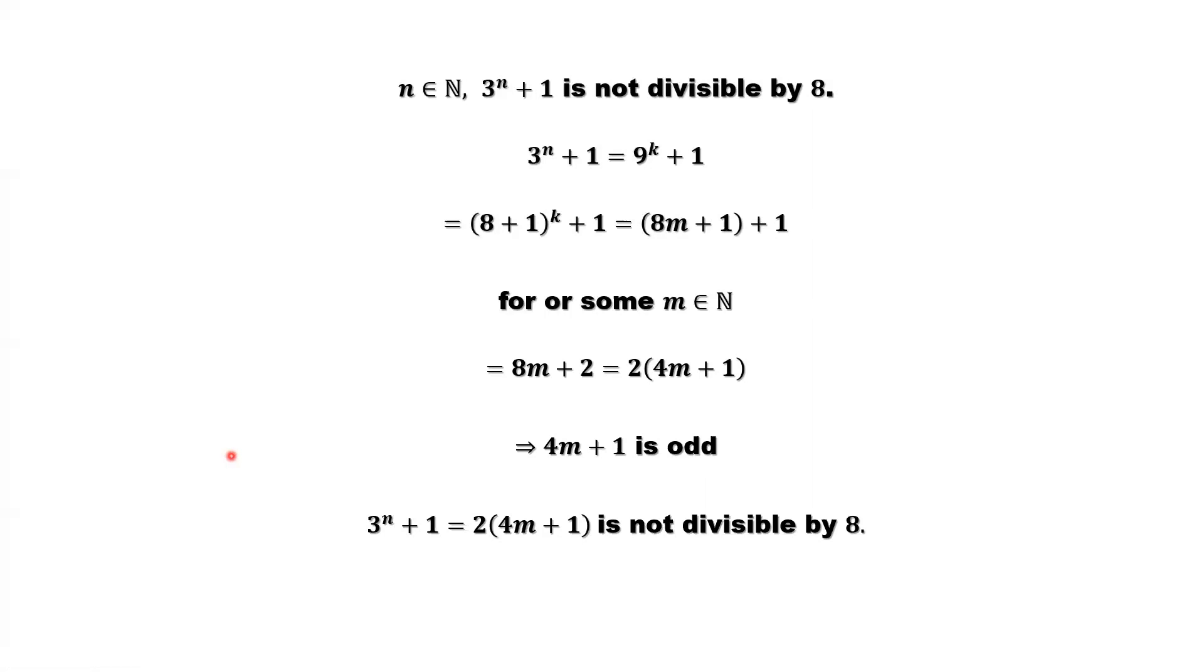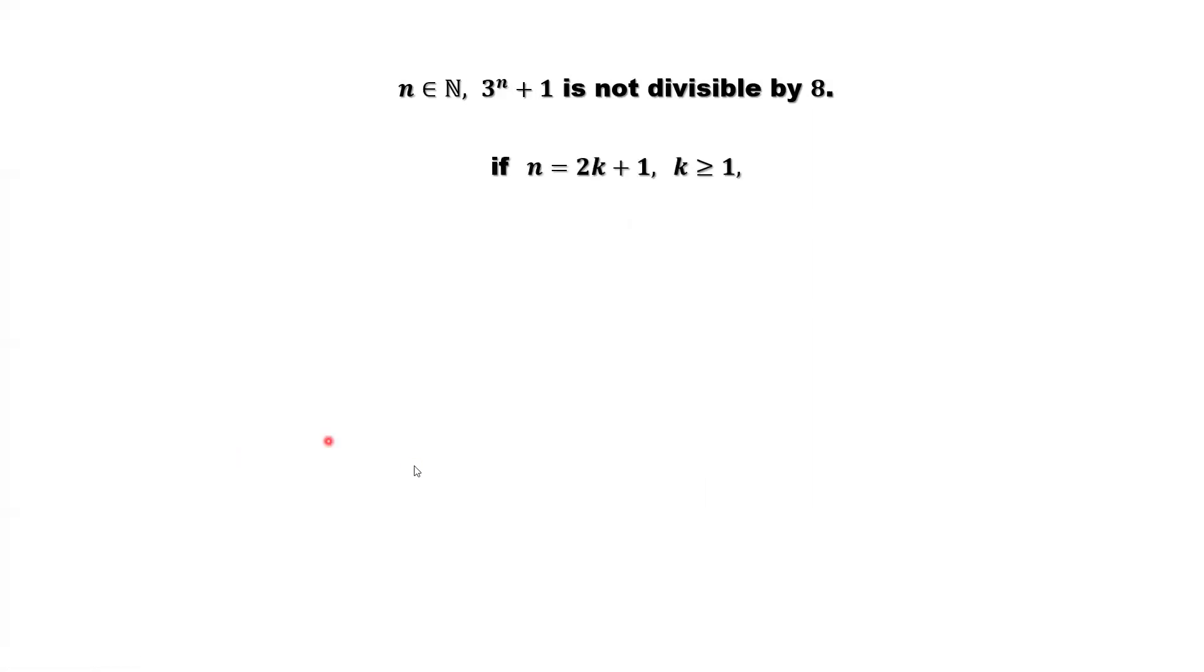The last situation: n equals 2k plus 1. This means n is an odd number. 3 to the power of n equals 3 to the power of 2k plus 1. This part, we can take 3 out. That's 3 times 3 to the power of 2k.